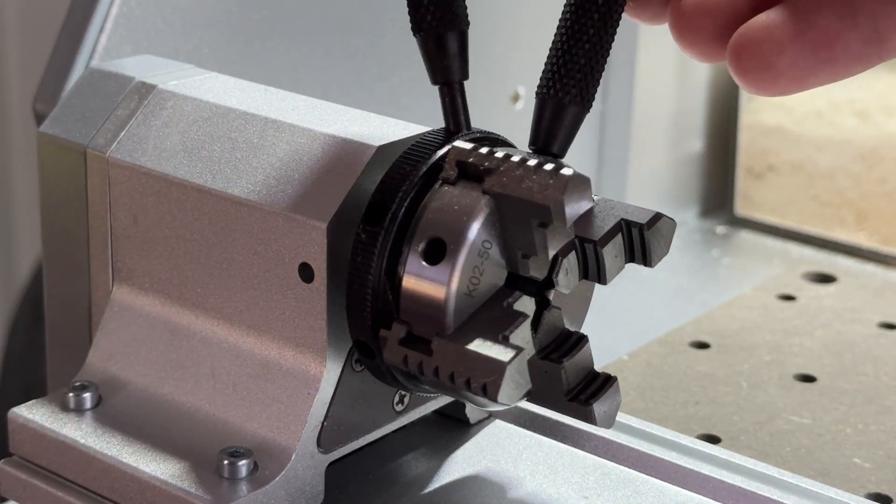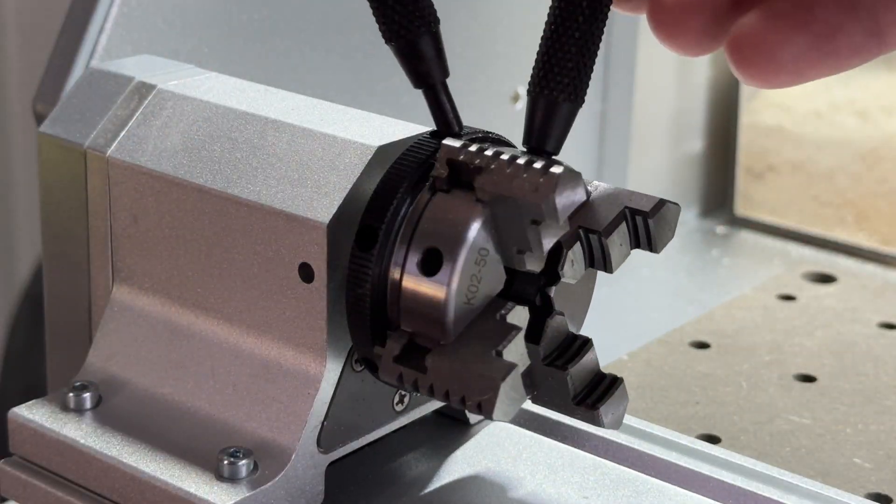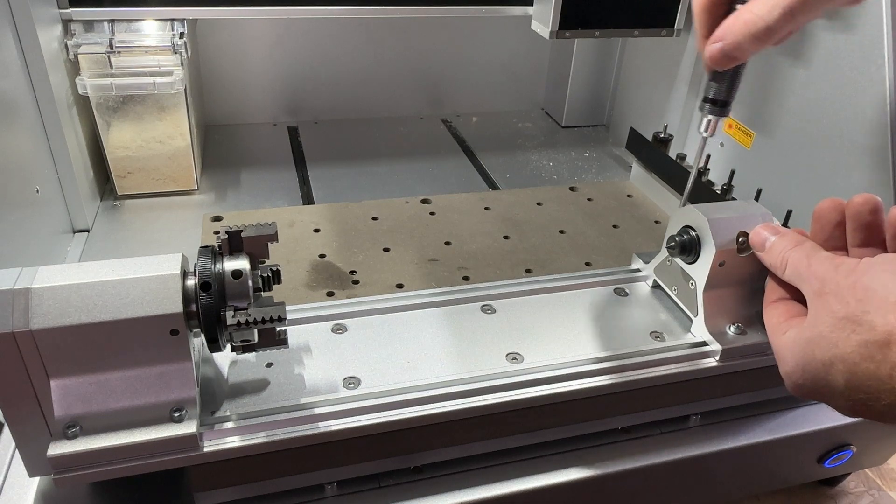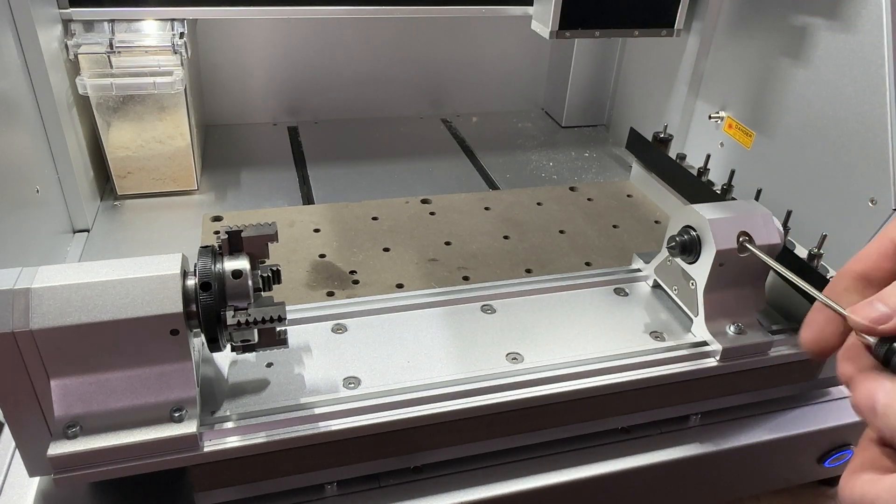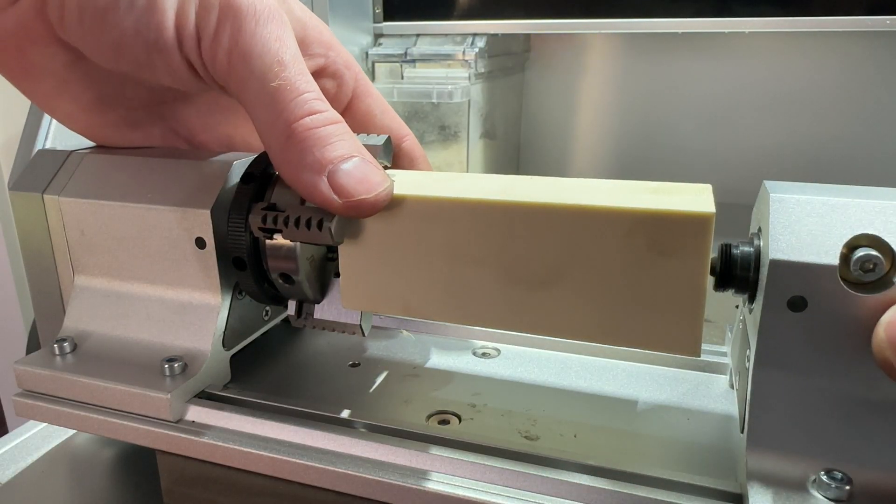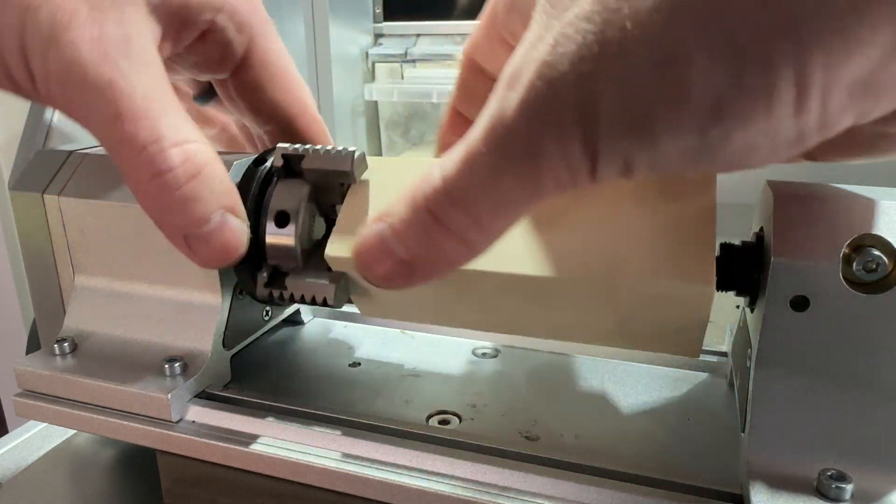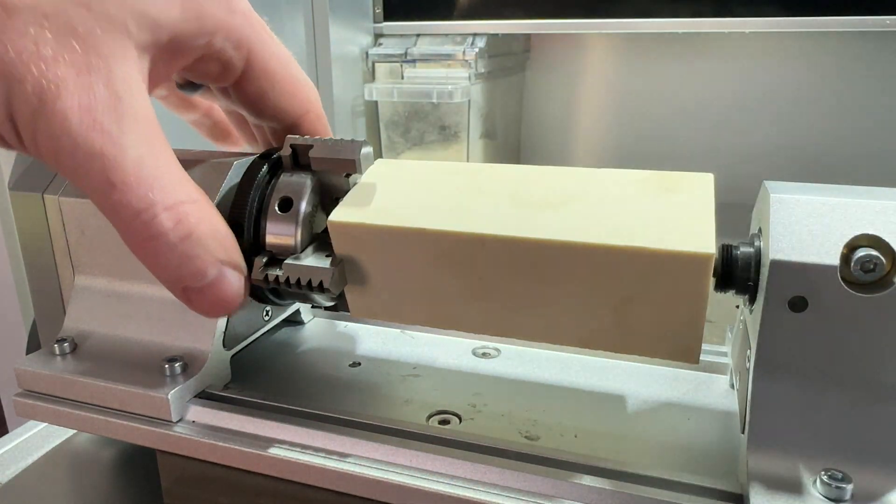We can loosen the chuck of our rotary module using the wrenches provided. We also want to loosen the set screws on our tail stock but we do not need to remove them entirely. First loosely place the part into the chuck, then slide the tail stock so it makes contact with the center hole we drilled into our stock.